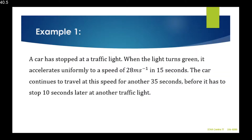Example 1. A car has stopped at a traffic light. When the light turns green, it accelerates uniformly to a speed of 28 meters per second in 15 seconds. The car continues to travel at this speed for another 35 seconds before it has to stop 10 seconds later at another traffic light. Part one: draw a speed-time graph showing the information above. Note that speed-time and velocity-time can be used interchangeably.